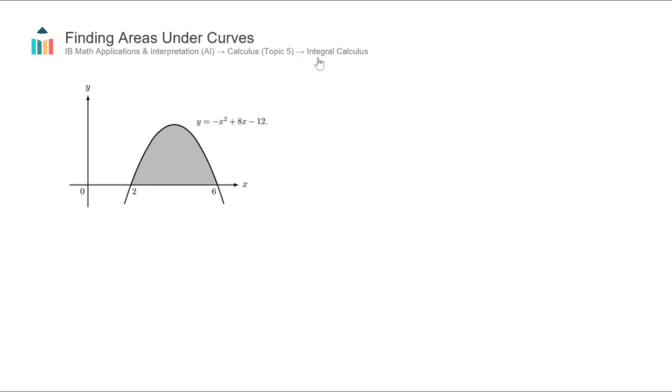In the first video of this series we gave an overview of the subtopic and talked about how it's all about finding areas under curves like this shaded region. In the second video we practiced the skill of anti-differentiating terms. In this video I'm going to show you three techniques to actually find this area: two using your calculator and the third doing it by hand.